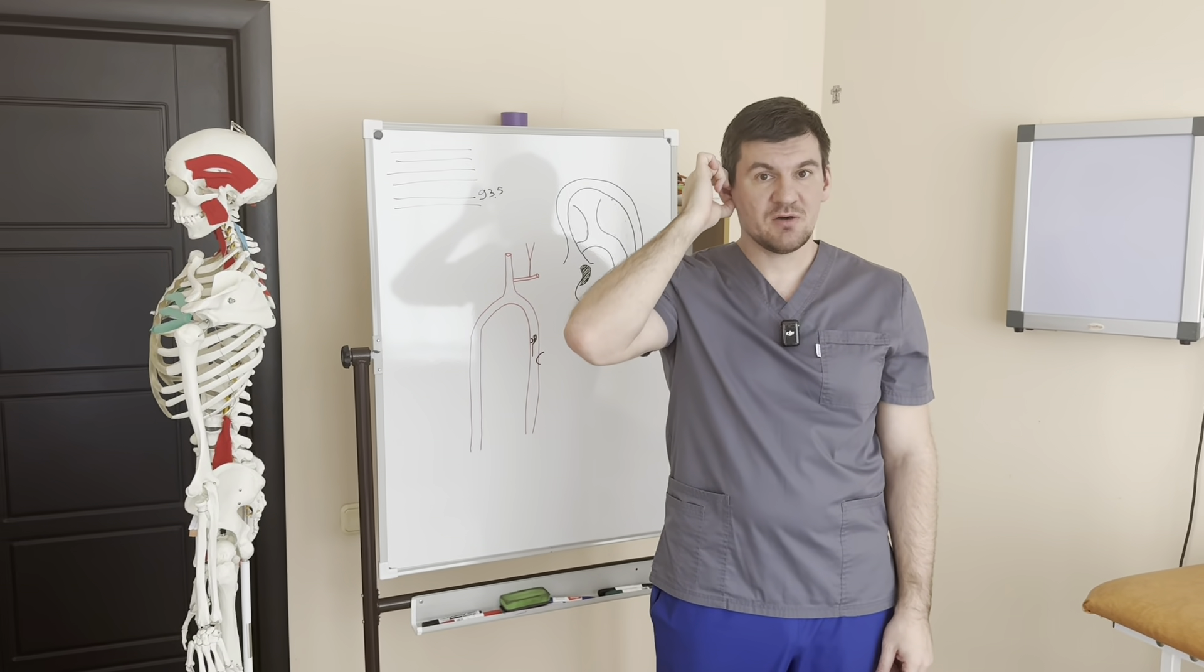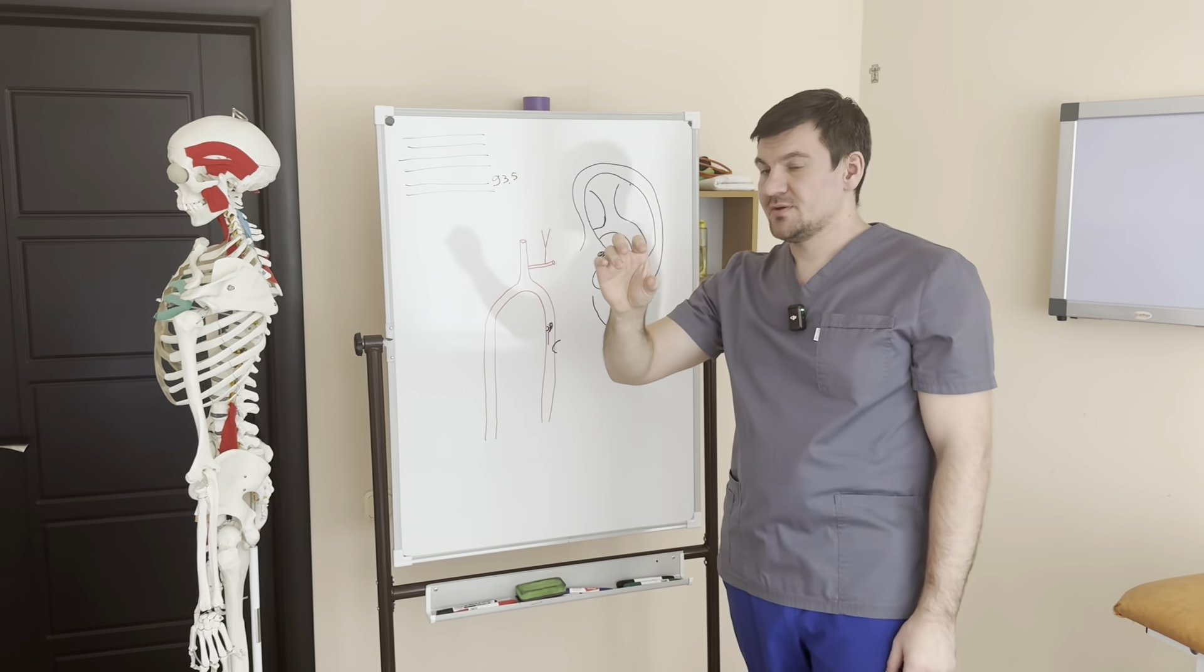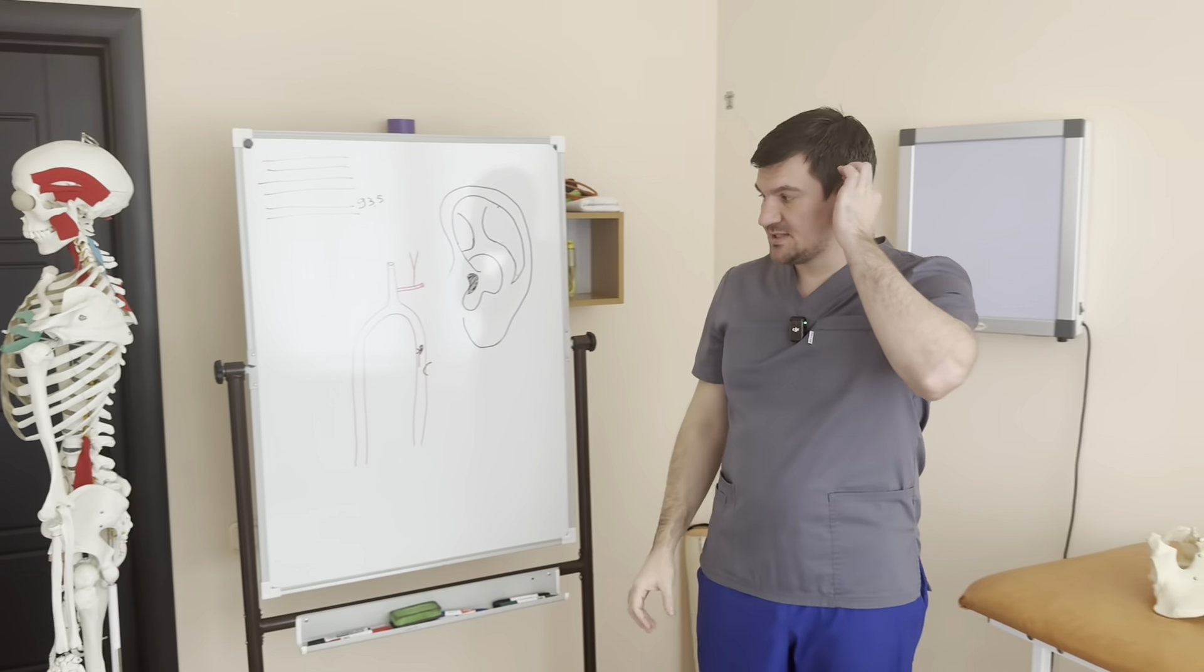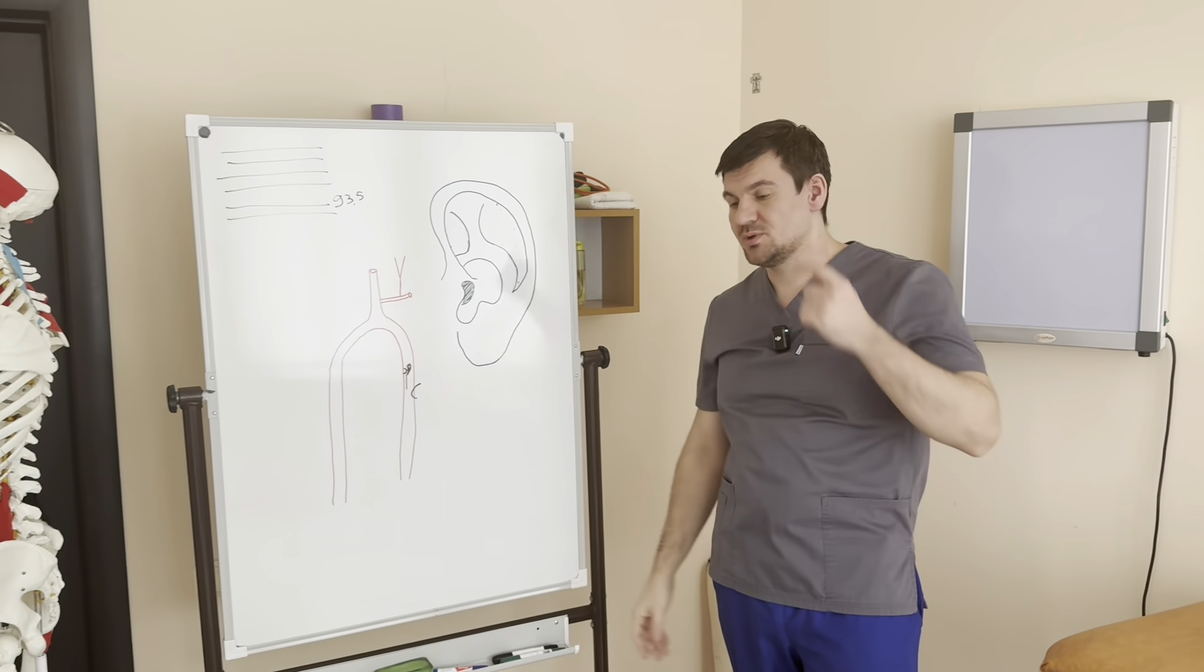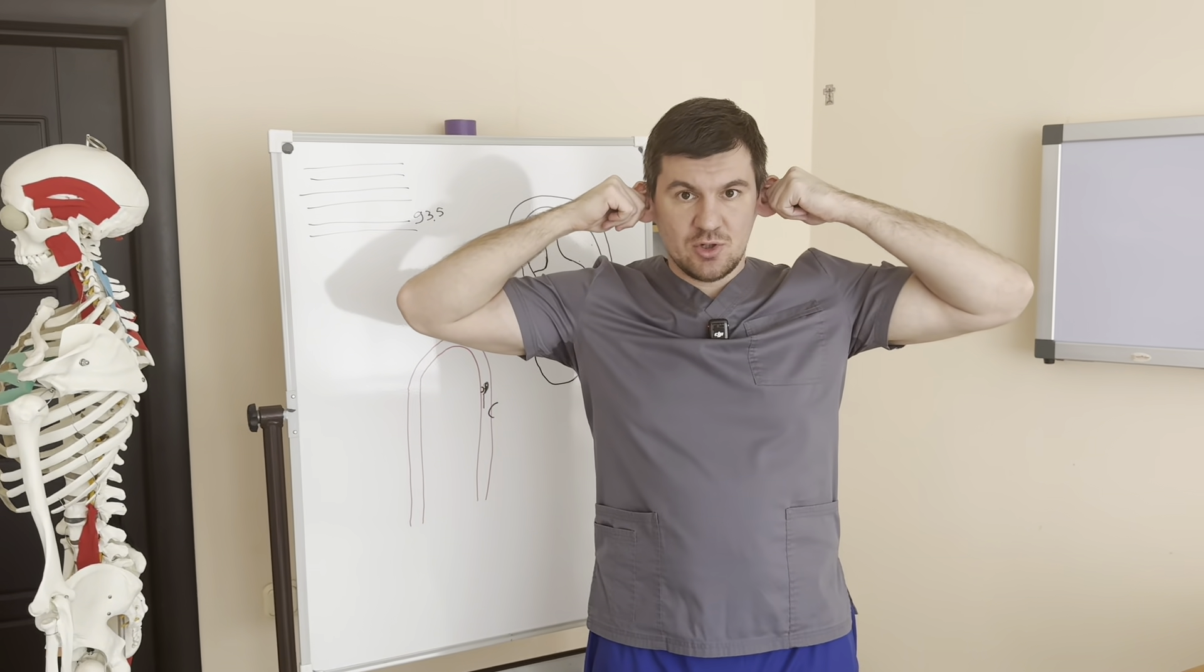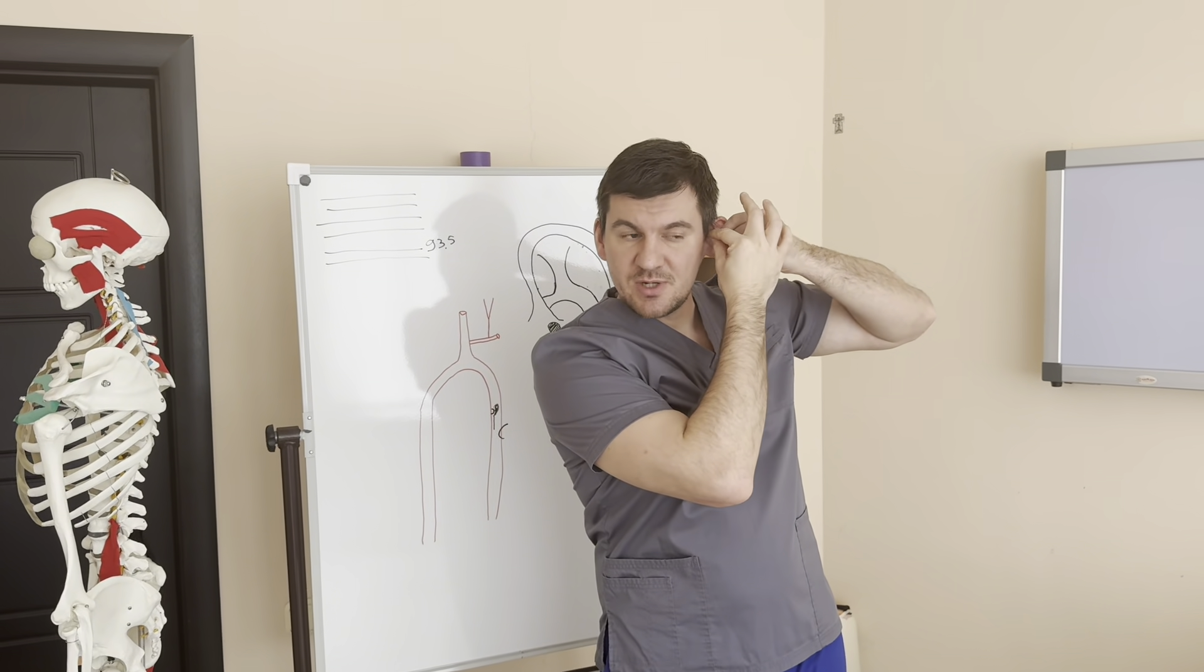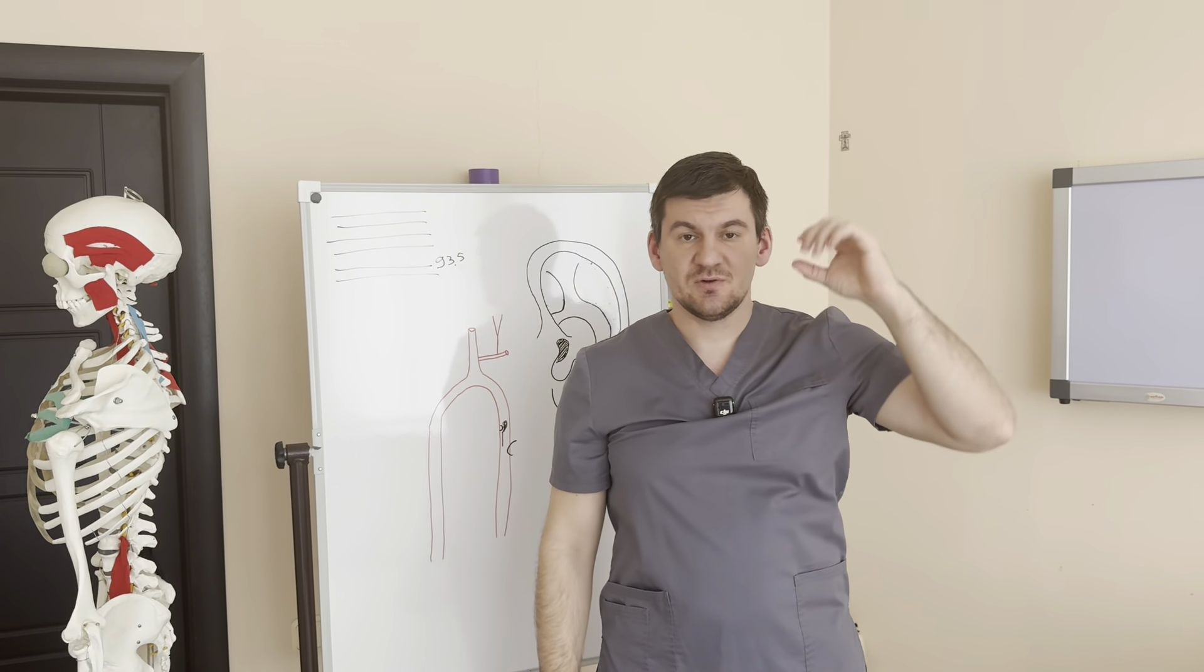And the third one that's really interesting - the auditory passage itself often loses its mobility and we need to restore it. That is, we cannot act directly on the very internal structures of the ear, but we can indirectly affect them. For this, you take the ear itself like this and pull it to the side.